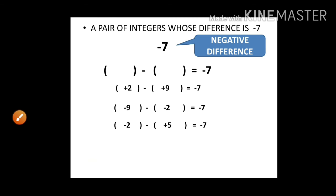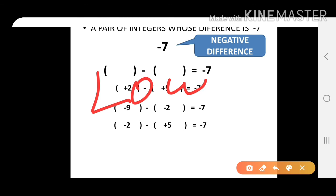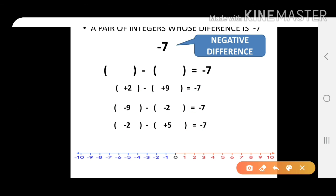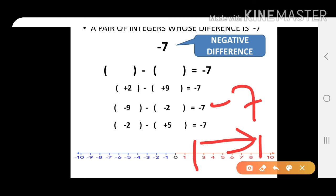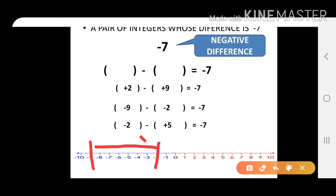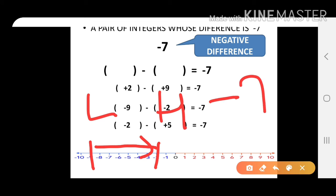For a negative difference, we take from low to high. On the number line, take plus 2 and plus 9: going from 2 up to 9 is going low to high, giving a difference of minus 7. Another example: minus 9 and minus 2 — from minus 9 up to minus 2 is also low to high, so the difference is a negative difference of minus 7.